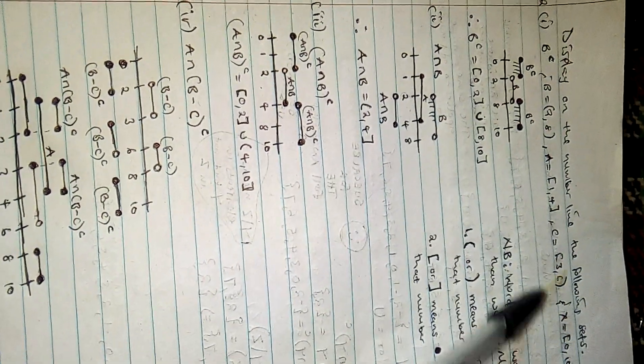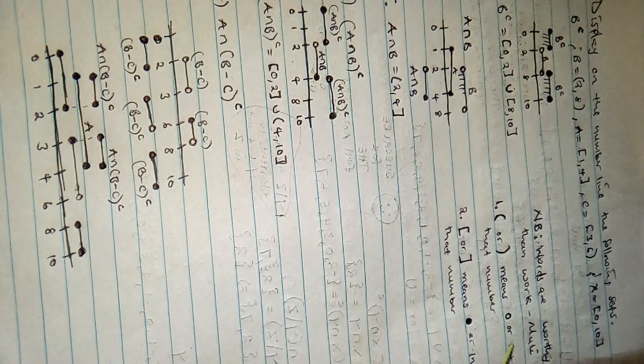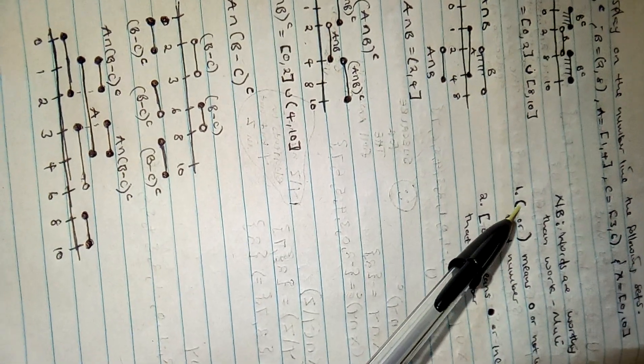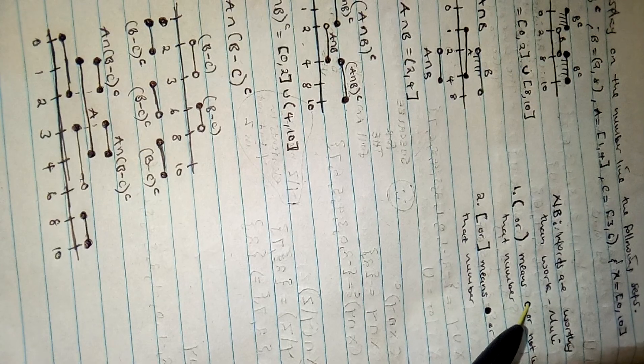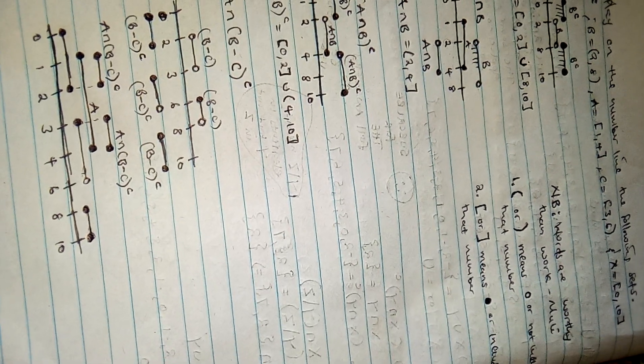This is how you show sets on the number line. Before we go further, you need to understand that when you see such symbols, it means that on your number line you use a parenthesis, not a bracket circle. That means that number is not included.